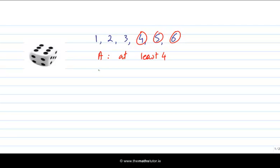We'll pick another event in green: that we roll an even number. Again, it's easy to pick out those events — two, four, or six, those are the even ones. So we have two events. Now, what do I mean by conditional probability? Let's start by calculating the probabilities of these events.